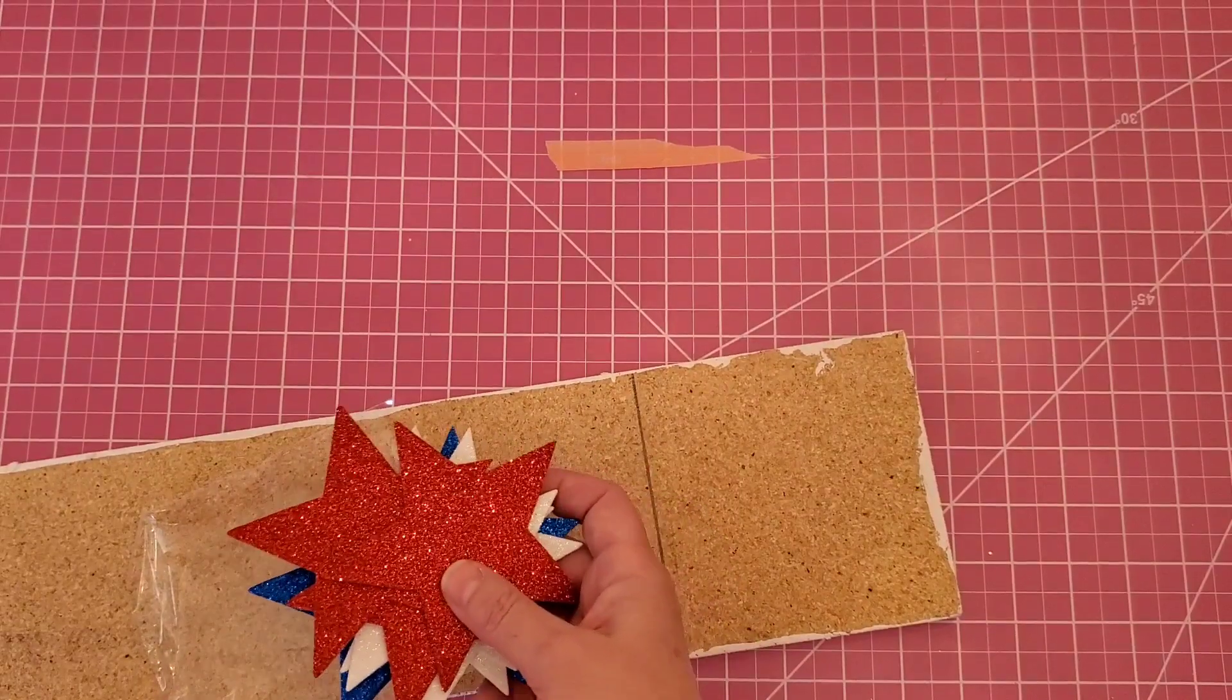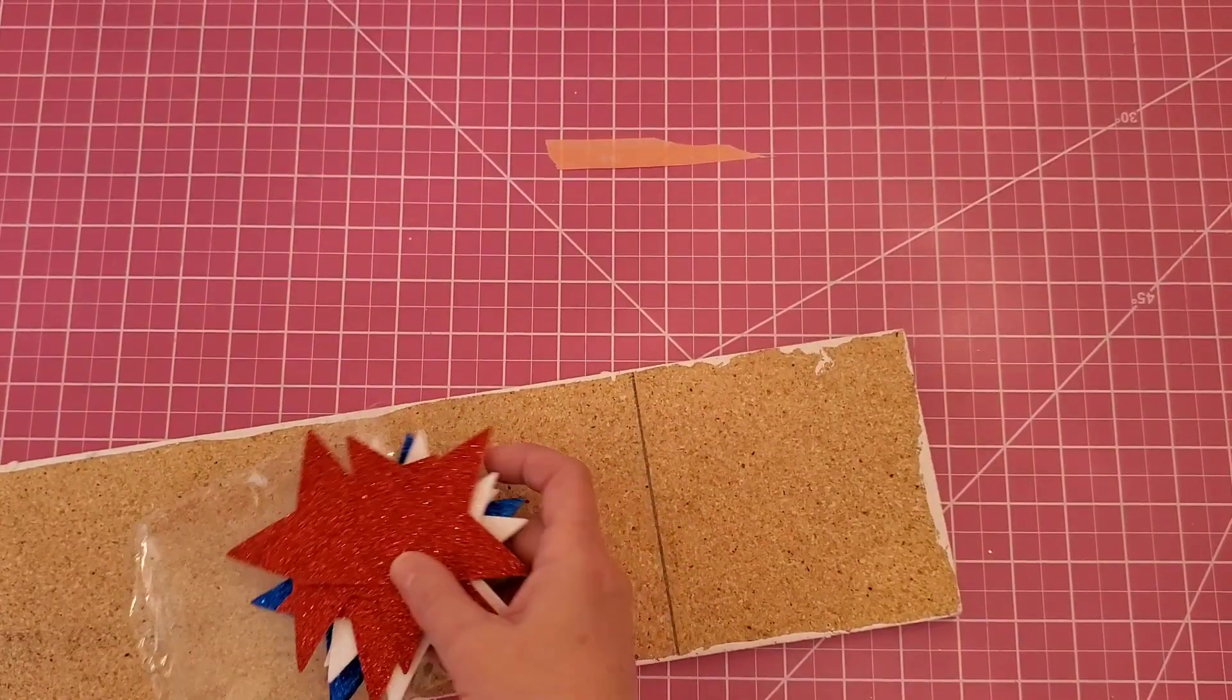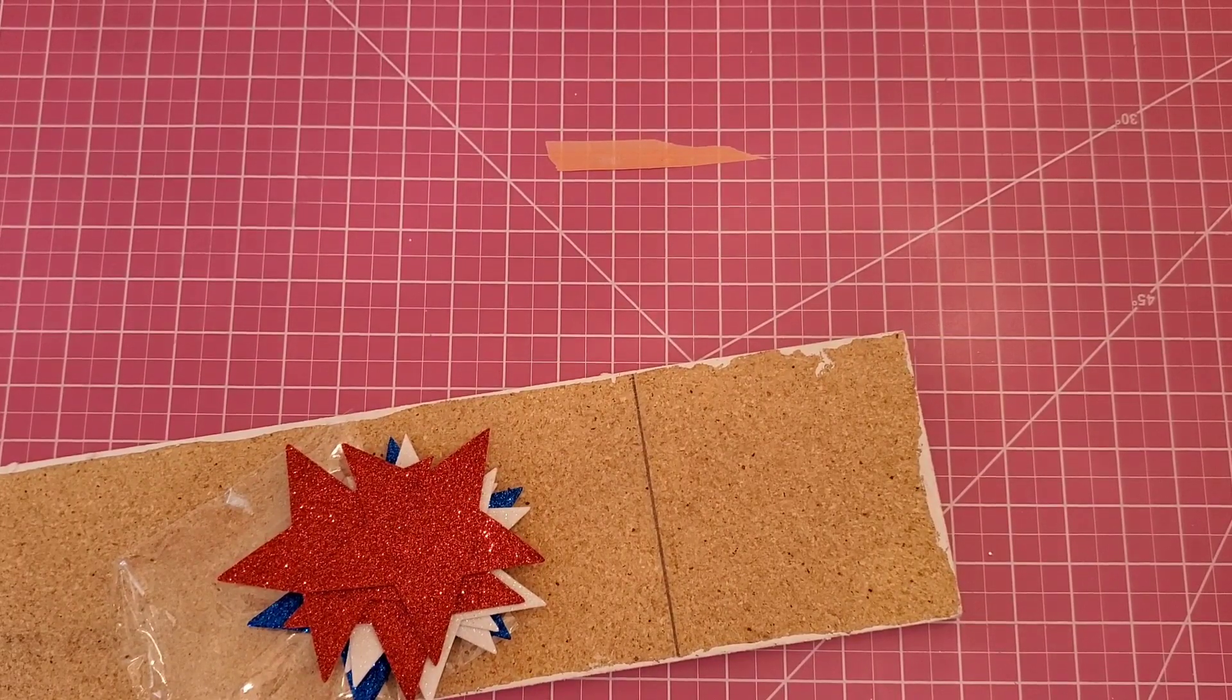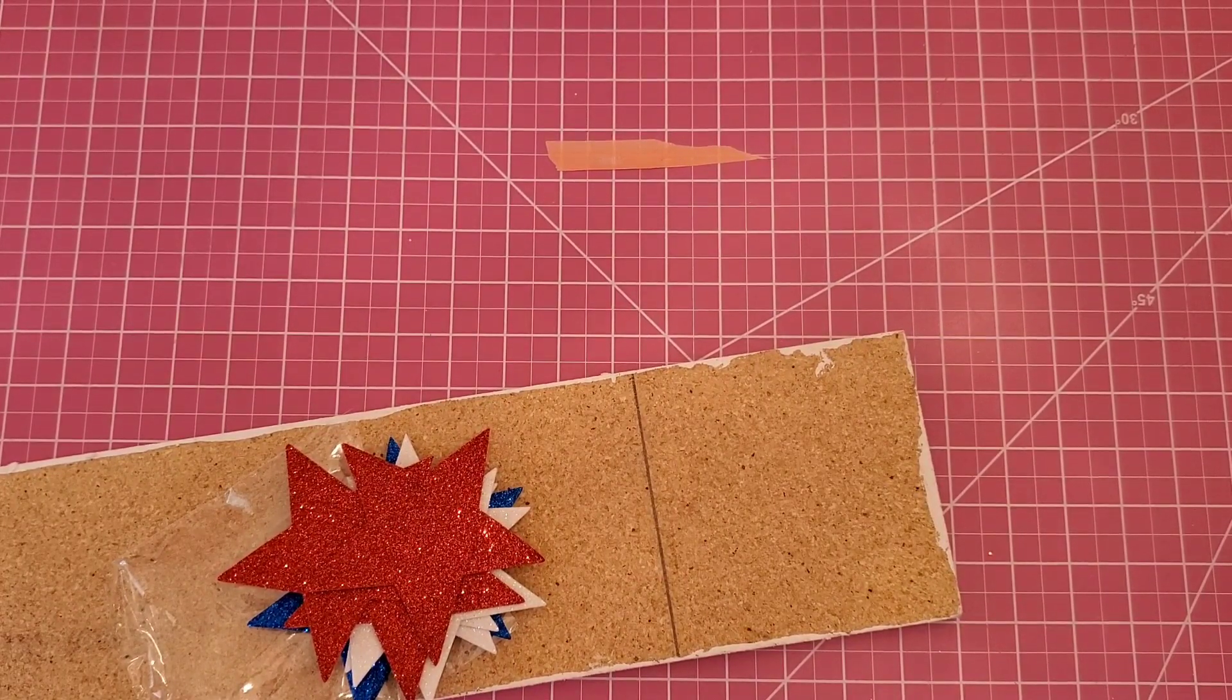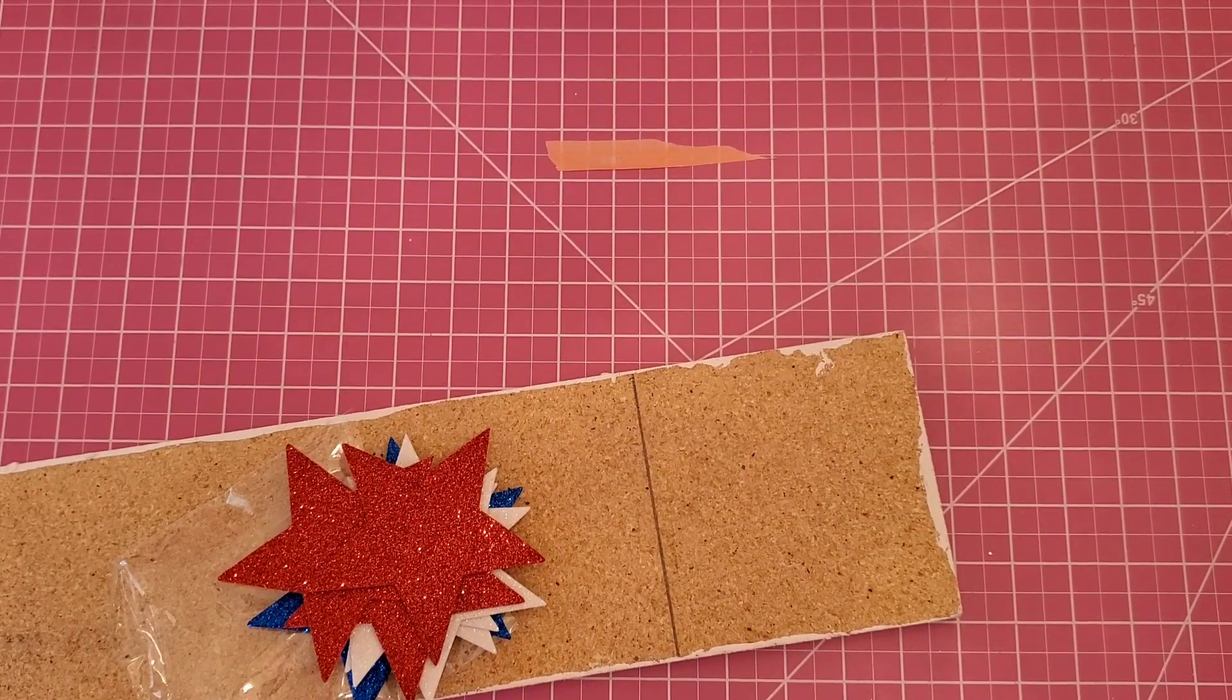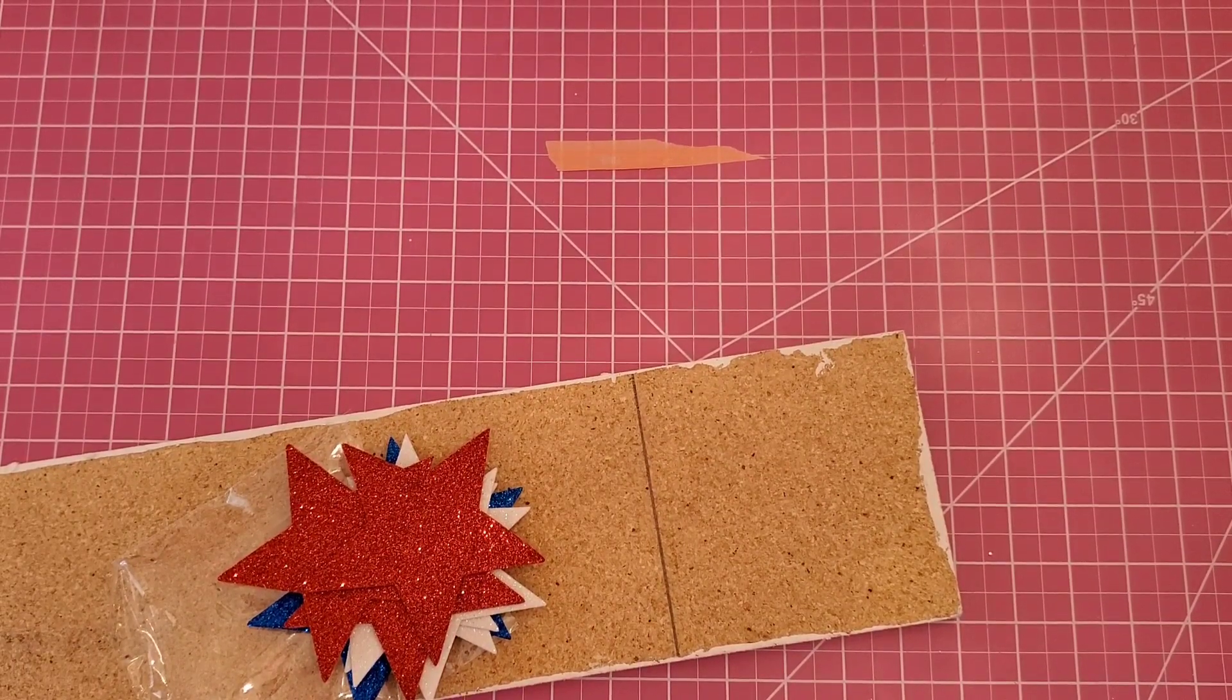And then I'll use Mod Podge on my entire board, because the paint I'm using is flat wall paint from Walmart. It was the only thing I could get. I couldn't go in the store, so I placed an online grocery order. That's the only paint I could get, so we're going to use it.